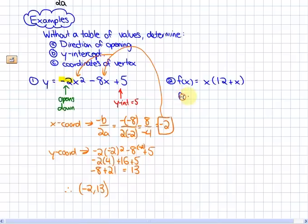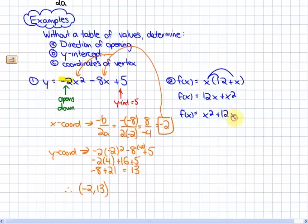For the second example, as long as we can represent it in standard form, we can do the exact same thing. The standard form would be f(x) = x² + 12x, with c equal to 0. So we could do the same thing for this example to find out the direction of opening, y-intercept, and coordinates of the vertex.